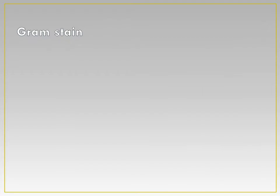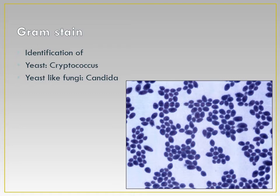The Gram stain is very useful for identification of yeast and yeast-like fungi. An example of yeast is Cryptococcus, and an example of a yeast-like fungus is Candida, which can be seen in the picture. Candida is Gram-positive, which is why it is observed as a purple color.